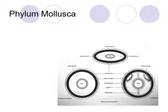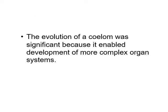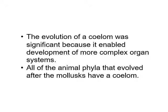Many things with open circulatory systems are smaller because they can't move blood around as quickly and efficiently as we can. Our first phylum we've been talking about is Mollusca. These are organisms that are coelomates, meaning they have a true hollow fluid-filled cavity completely surrounded by mesoderm — a body cavity on the inside for different tissues to develop and for muscles to push off of when the organism is moving. The evolution of this coelom was very significant because it allowed the development of more complex organ systems in animals.